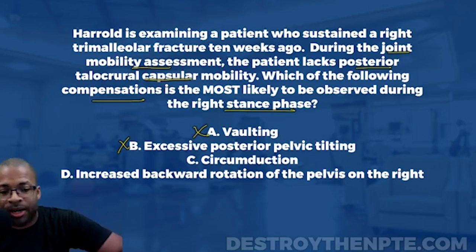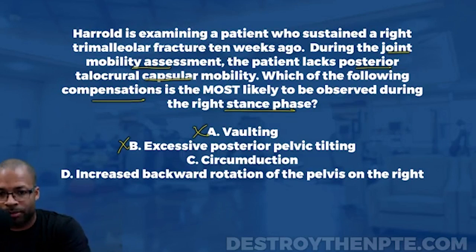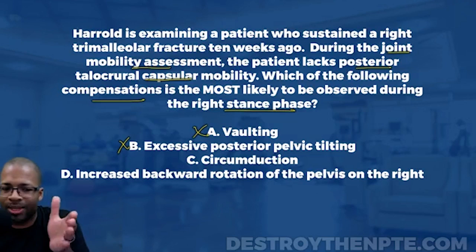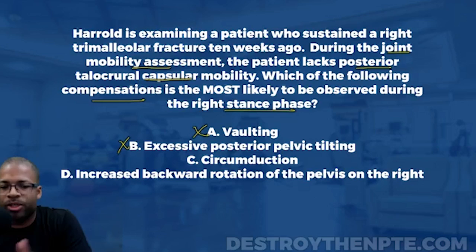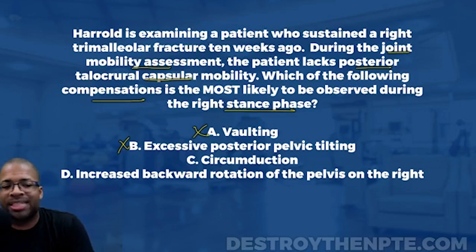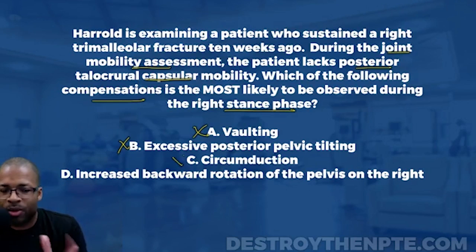Let's look at C — circumduction. The question asks which compensation is most likely observed during the right stance phase. When does circumduction occur — during stance phase or during swing? Circumduction is a swing phase compensation, a swing phase deviation. It does not happen in stance phase. So C can't possibly be right because it doesn't answer the question, which is specifically asking about the stance phase.